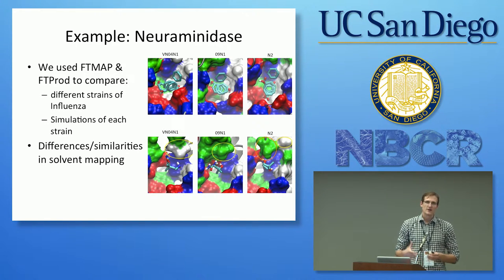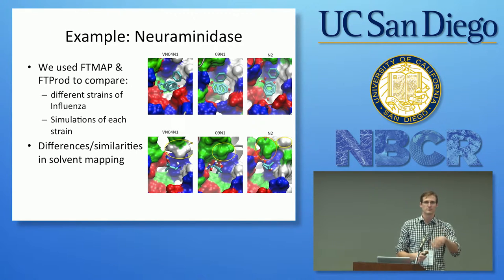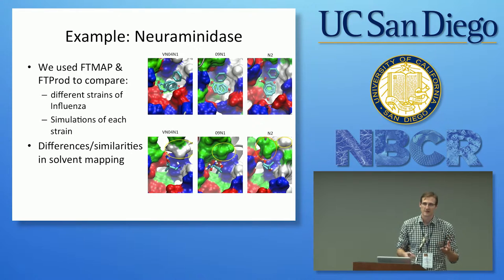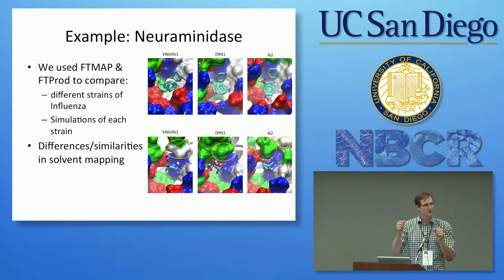FTMAP and FTProd are not very quantitative tools — they're qualitative. They're designed to give you an intuition into what's going on. It's not giving you a number you can put into a statistical mechanical formula; it's just designed to help your intuition. So it will be something of an art to shift these different options to get what you're looking for.